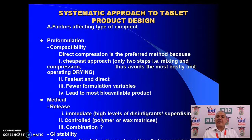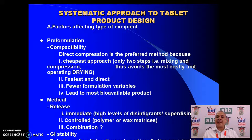The systematic approach to tablet product design consists of four to five important factors. The first factor is factors affecting the type of excipient. Regarding compactability, fewer processes involved in product formulation means a better product. Direct compression is the preferred method because it is the cheapest approach — only two steps: mix the API and excipients, then compress. It avoids the costly unit operation of drying, is the fastest and most direct method, involves fewer formulation variables, and leads to the most bioavailable product.